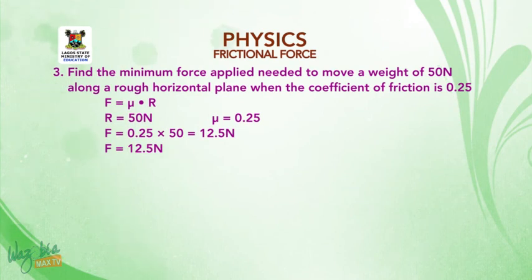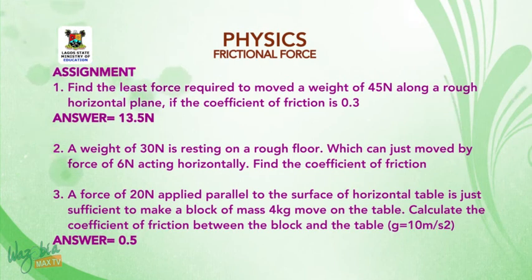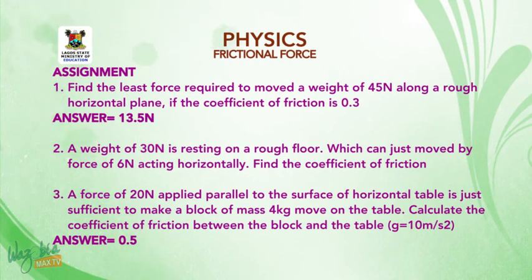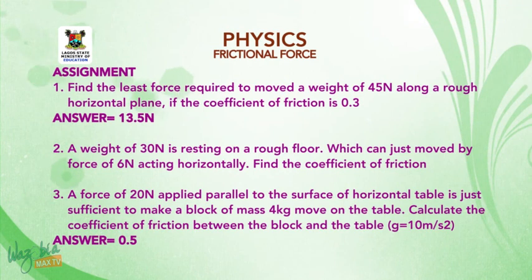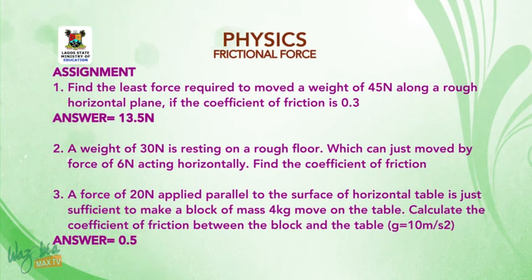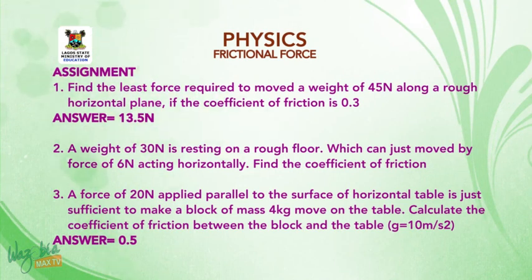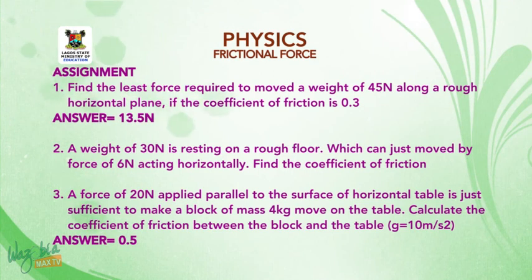Assignment. 1. Find the least force required to move a weight of 45 N along a rough horizontal plane if the coefficient of friction is 0.3. 2. A weight of 30 N is resting on a rough floor which can just move by a force of 6 N acting horizontally. Find the coefficient of friction. Thank you, we'll meet later.